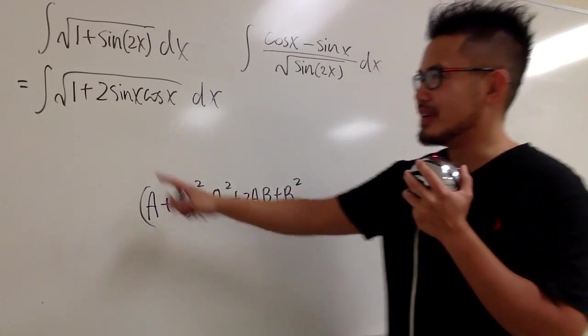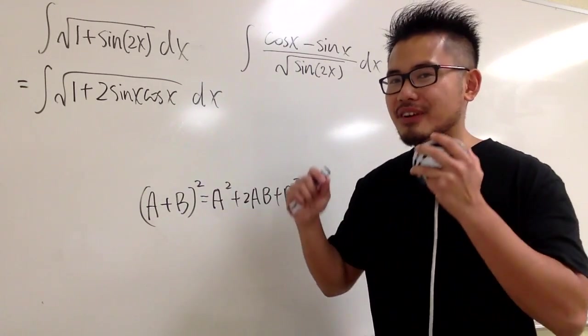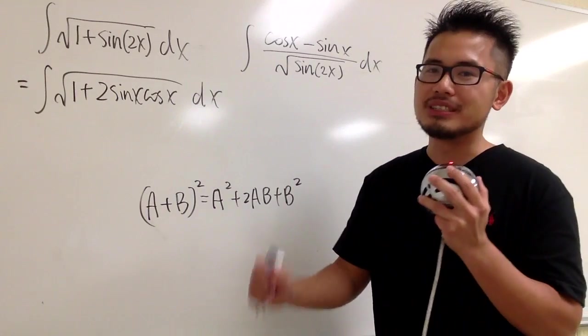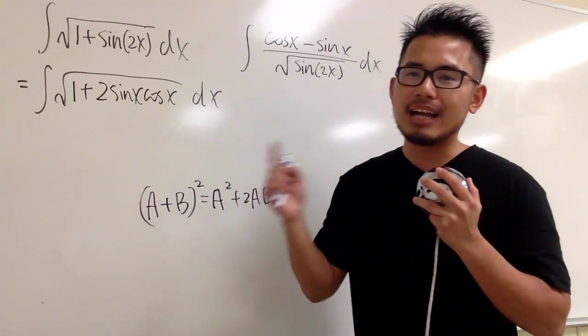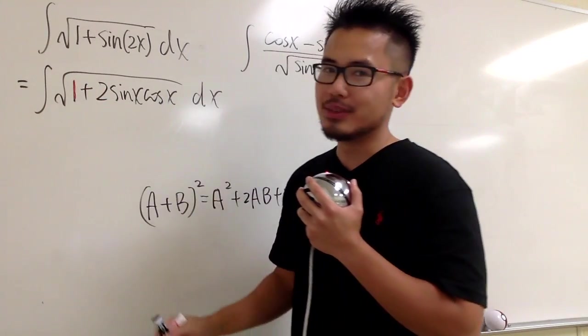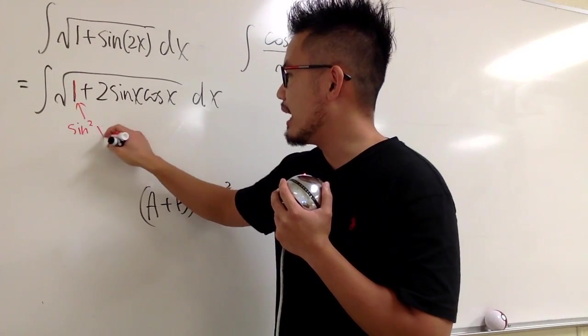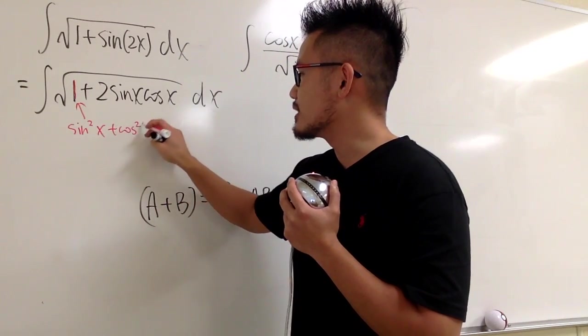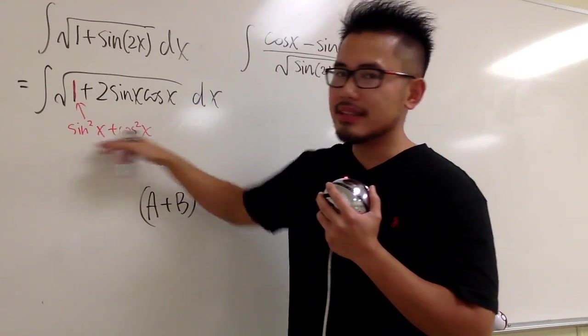Let me remind you guys one of the most famous formula. We have a plus b in the parentheses square, which is a square plus 2ab plus b square. And we see that the 2 times sine x times cosine x looks so much like this, the 2ab. And now the question is, is it possible for us to get the a square and the plus b square over there? Yes, we are going to use the 1 to help us out.